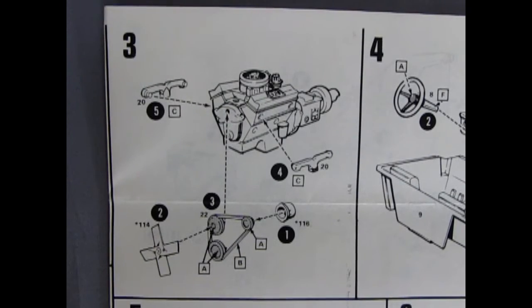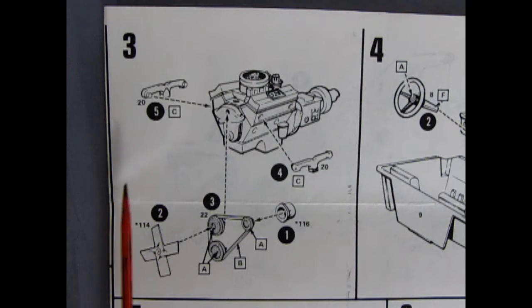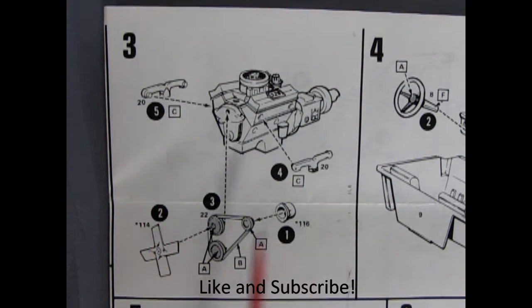Panel number two has the carburetor going in place as well as the air cleaner, our coil, our distributor and our 350 valve covers as well as an oil filter. In panel three we finish our Chevrolet motor by putting on the exhaust manifolds, our belts and pulleys, the alternator and our fan.